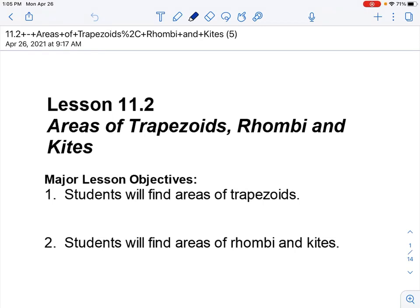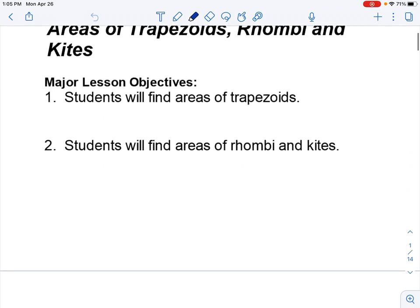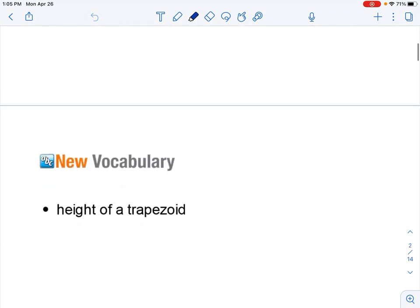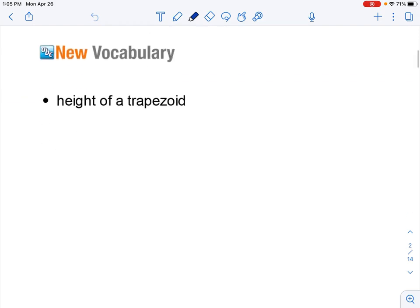Hello! Today we are going to cover Lesson 11.2, Areas of Trapezoids, Rhombi, and Kites. By the end of this lesson, you'll be able to find the area of each of these.